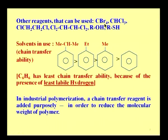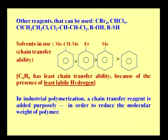Very similar to CCl4, there are various other reagents that can also be used: CBr4, CHCl3 (chloroform), CH2ClCHCl2, wherein you can see the presence of chlorine or bromine in all these molecules. ROH — any alcohol — can also be a chain transfer agent where OH forms a radical, and RSH mercaptans are also available. These are the various groups or reagents which can similarly be used for terminating a polymerization reaction by chain transfer methodology.